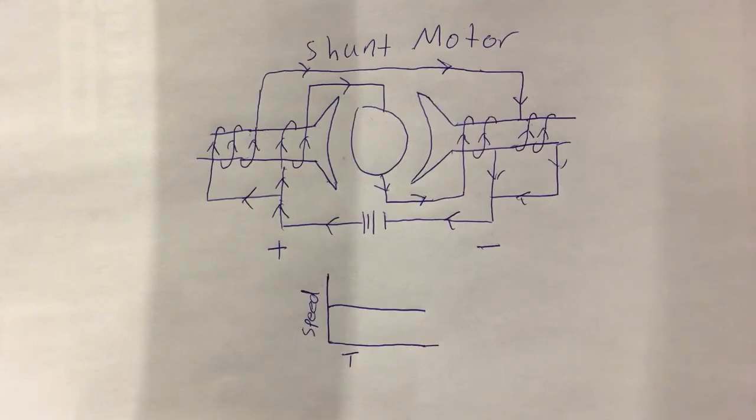A shunt motor spins slower than a series motor for lighter loads, but it's able to spin at almost constant speed as its load increases and it's needed to provide more torque to rotate the object.